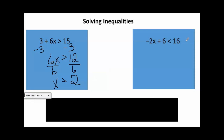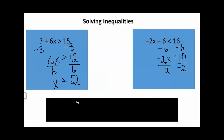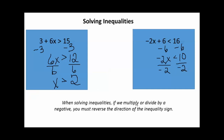Now let's look at this next example. Again, we're going to start off the same way — we're going to subtract 6 from both sides of our inequality. When we do that, it leaves us with negative 2x is less than 10. So to get rid of that negative 2 that's being multiplied by x, we're going to divide both sides by negative 2. Now here is where solving an inequality differs from solving an equation: if we multiply or divide by a negative, we must reverse the direction of the inequality sign.